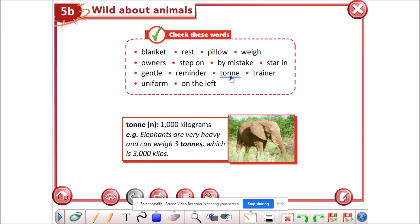Ton, ton is a noun. It means one thousand kilograms. For example, elephants are very heavy and can weigh three tons, which is three thousand kilos.